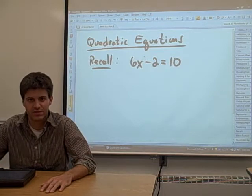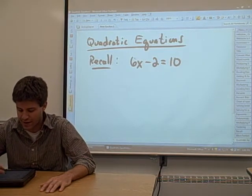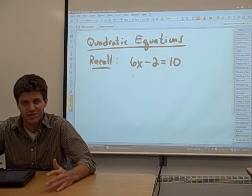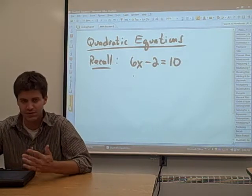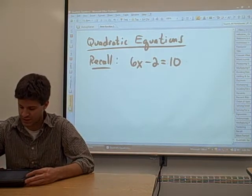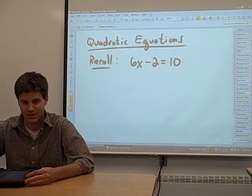Now, we solved these equations pretty simply. We got all the terms with x's in them on one side of the equation. We got all the other stuff on the other side of the equation. So in this case, we wanted to get the 6x by itself. In order to do that, we had to get rid of this minus 2.